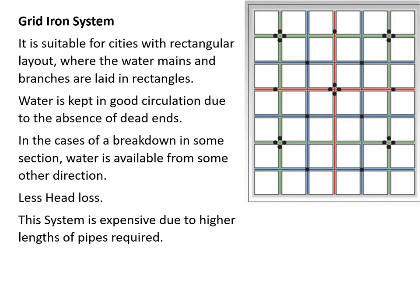The grid-iron system is suitable for cities with rectangular layouts, where water mains and branches are laid in rectangles. Water is kept in good circulation due to the absence of dead ends. In case of a breakdown in one section, water is available from another direction at the same point. There is very limited pressure loss, but this system is expensive due to the higher length of pipes required.